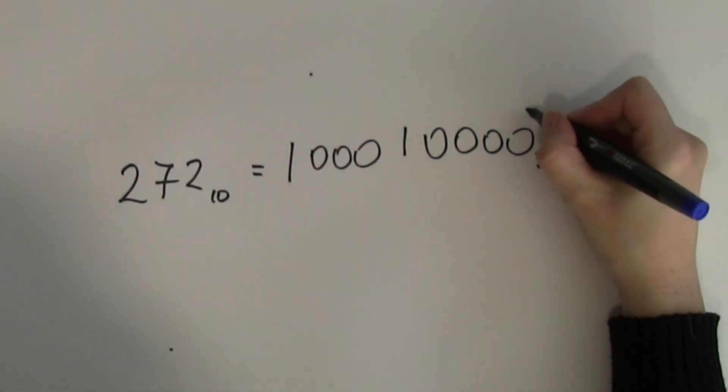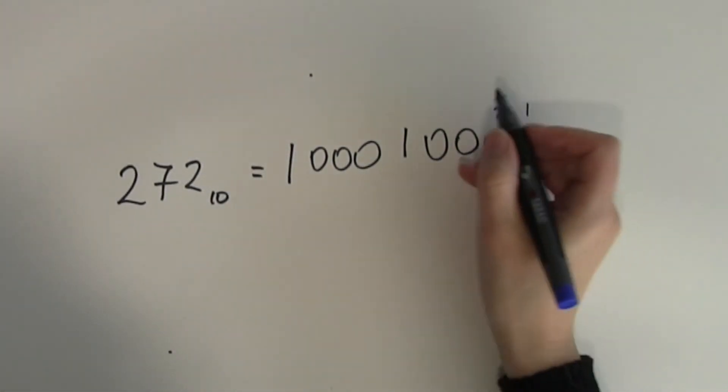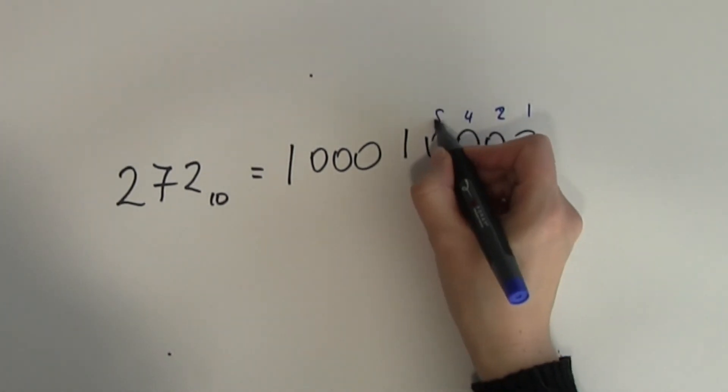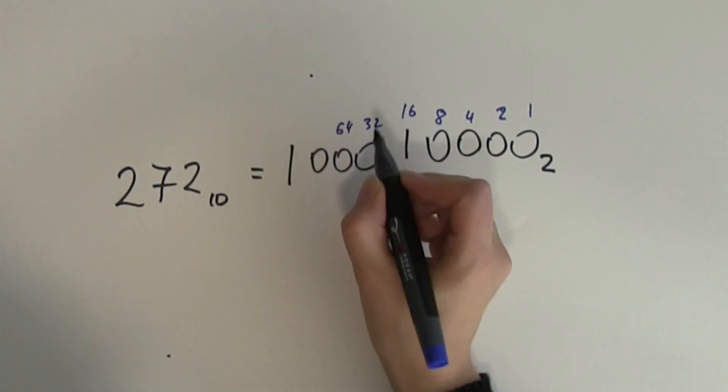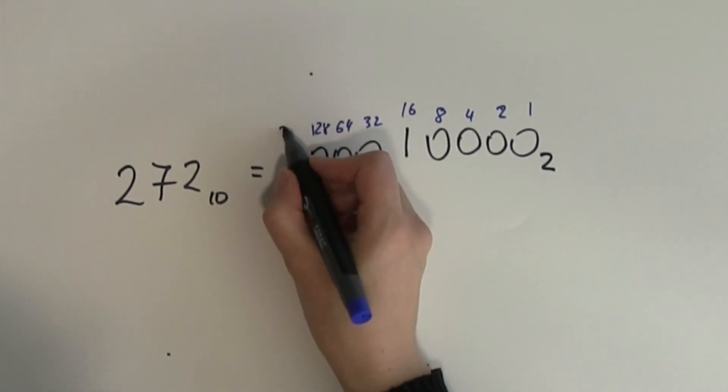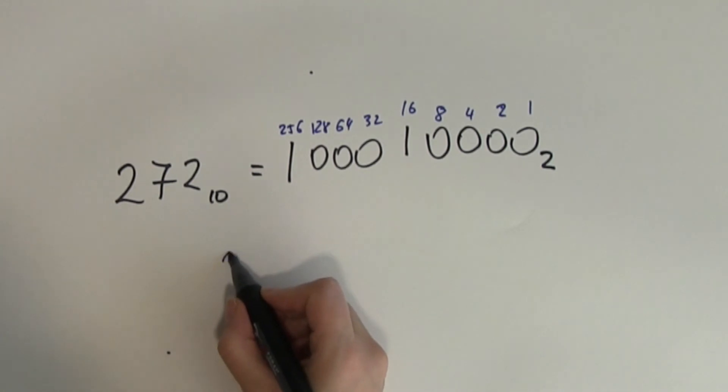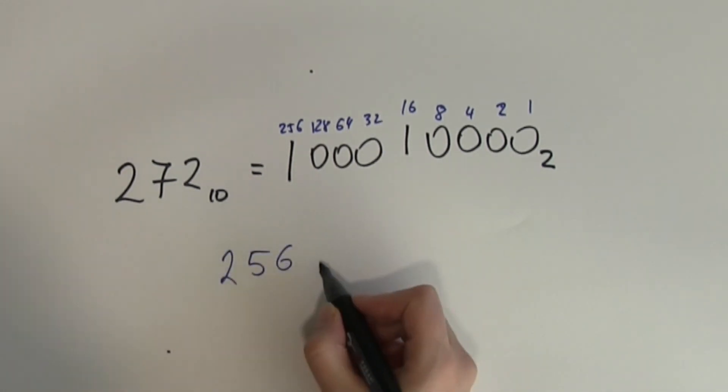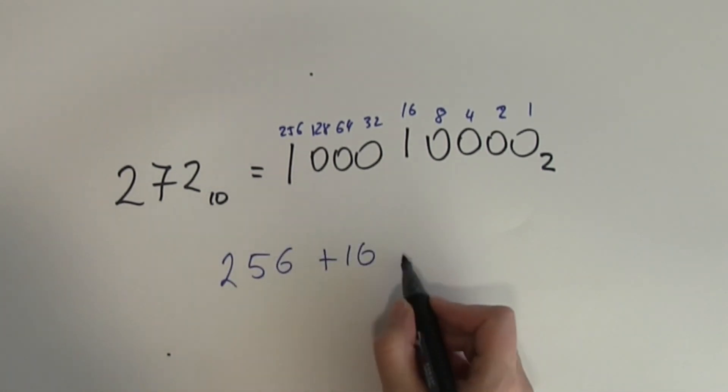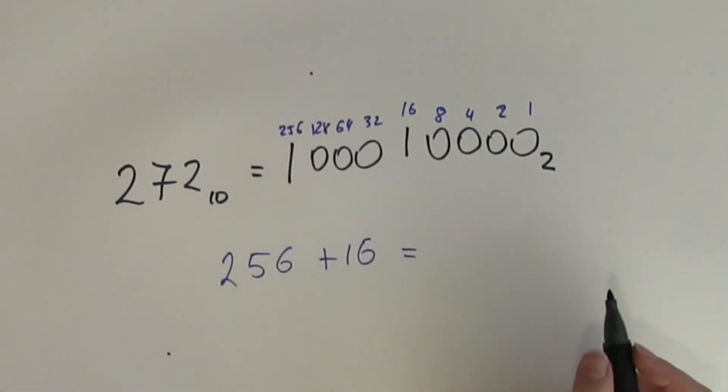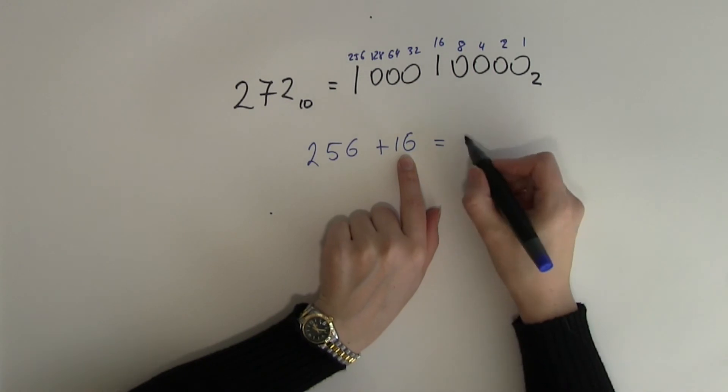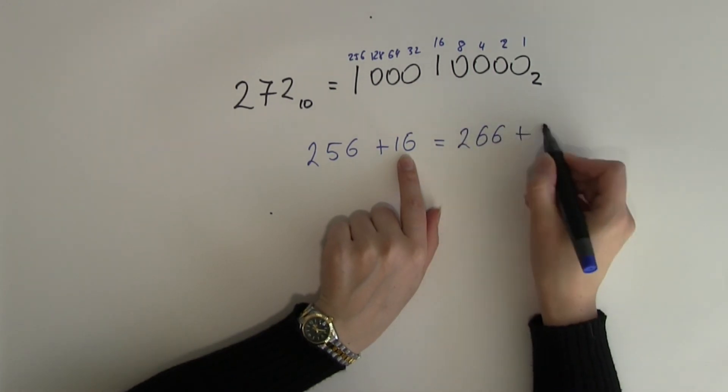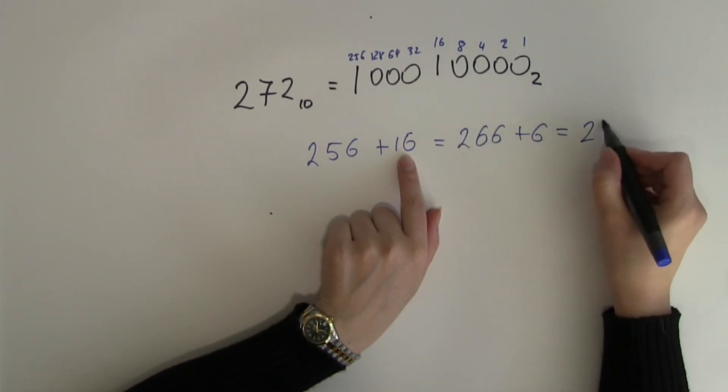So 1, 2, 4, 8, 16, 32, 64, 128, 256. So what I've got here is 256 add 16. So 256 plus 10 is 266 plus 6 that is indeed 272.